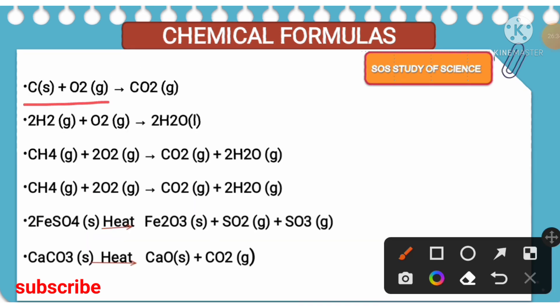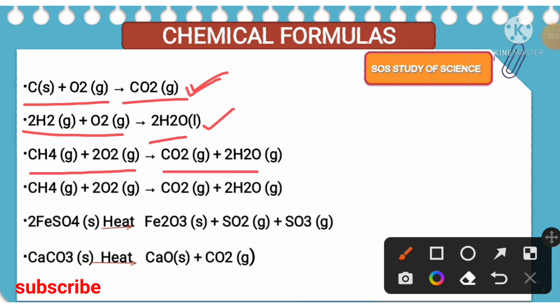Carbon combines with oxygen to form carbon dioxide — this is an example for combination reaction. Hydrogen combines with oxygen to form water — this is also an example for combination, because according to combination reaction, two reactants combine to form one single product. Next, methane when it is burned in the presence of oxygen, we get carbon dioxide and water. Then ferrous sulfate is heated — when you heat ferrous sulfate, we get ferric oxide, sulfur dioxide, and sulfur trioxide. This is an example for the decomposition reaction.